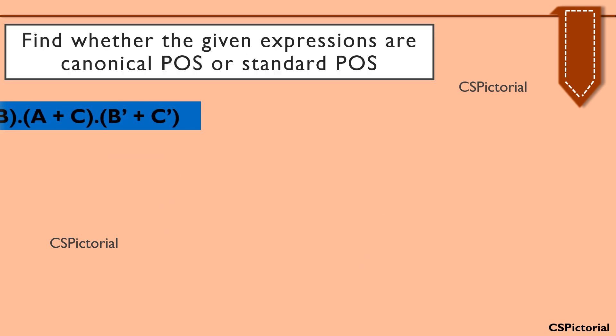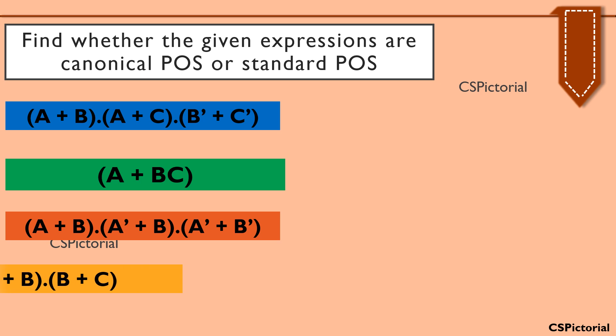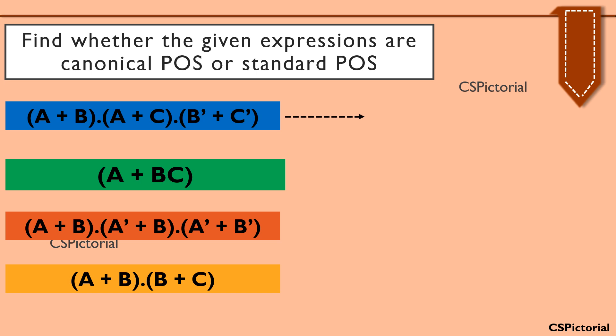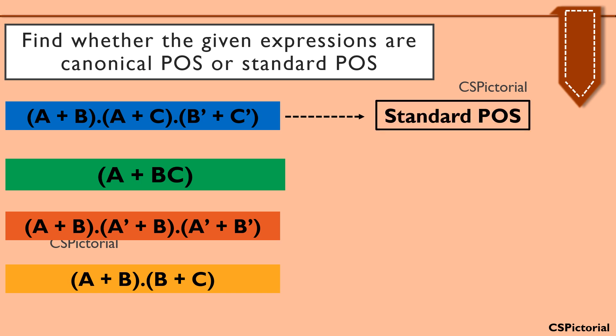Here a few POS expressions are given. We will try to sort out the canonical and standard POS from these expressions. Always remember: if each sum term has all the literals, it is canonical POS; the simplified expression is the standard POS. In the first expression (a plus b) into (a plus c) into (b bar plus c bar), the total literals involved are a, b, and c. But the first sum term a plus b is missing c, the second term is missing b, and the third term b bar plus c bar is missing a. So we could conclude that this expression is a simplified standard POS.